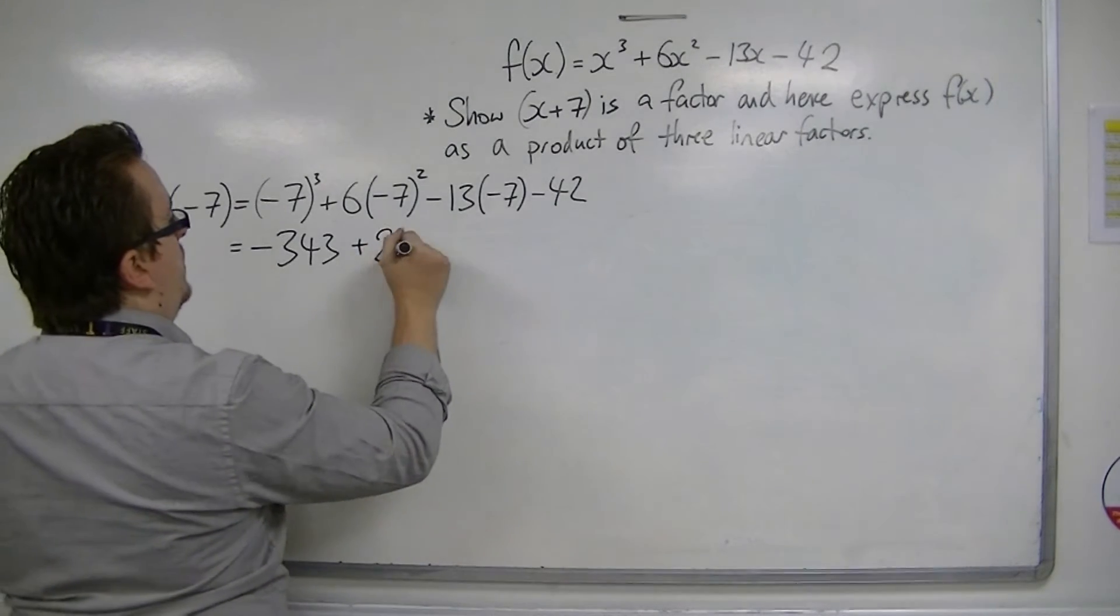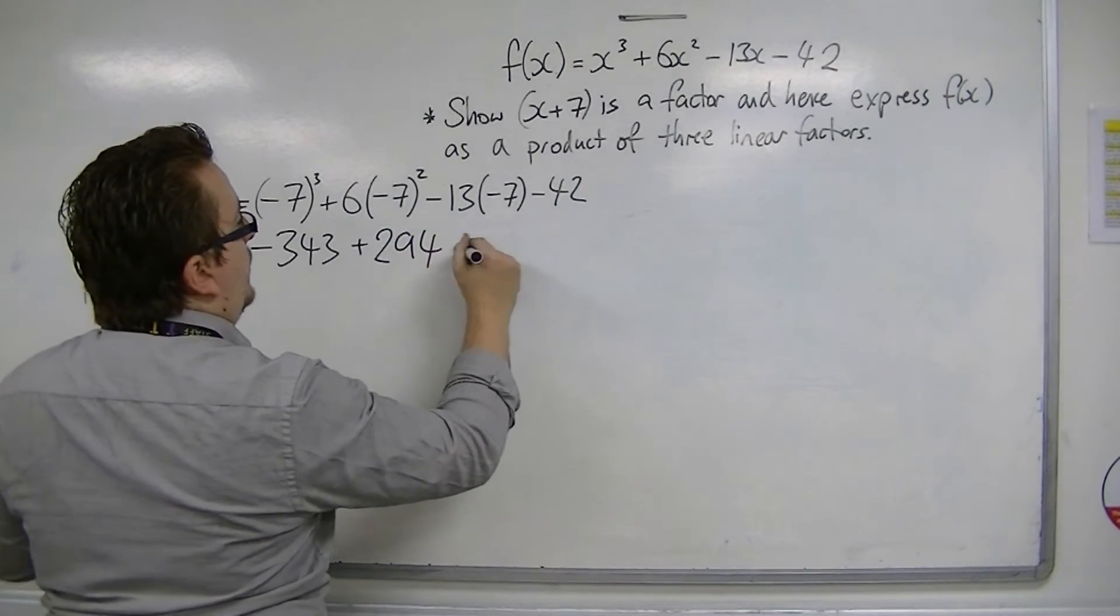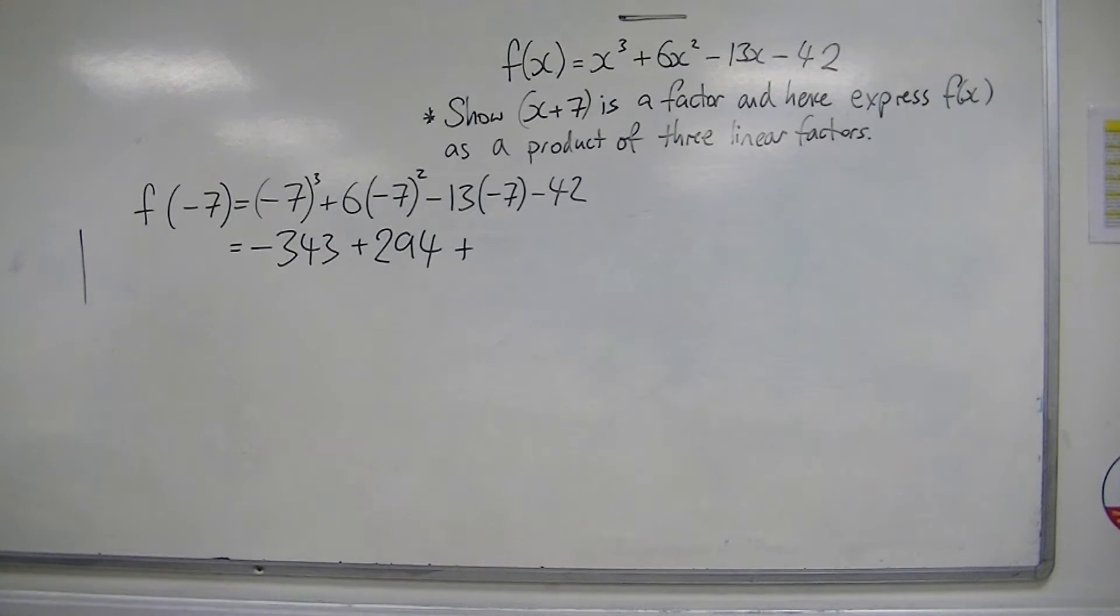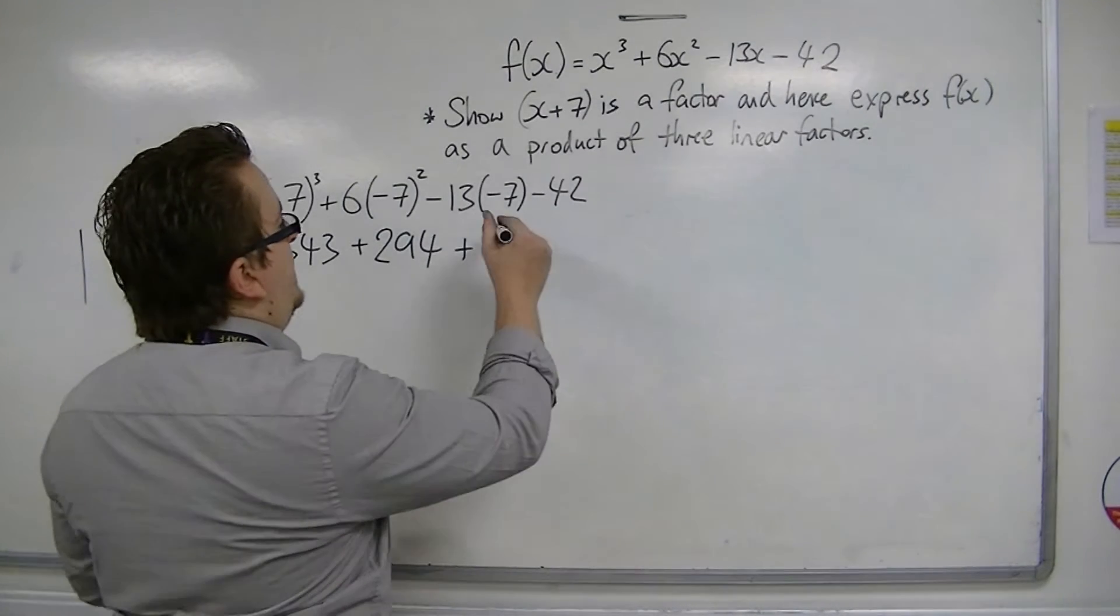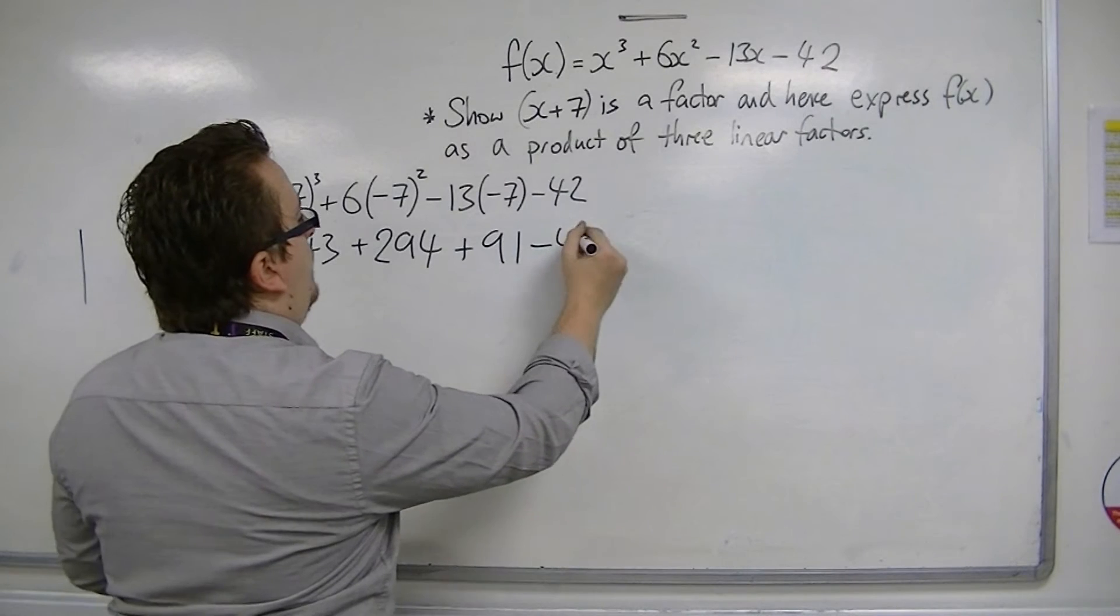Plus 13 lots of 7, 77, 84, 91, take away 42.